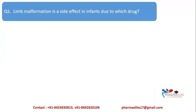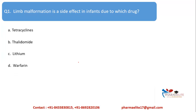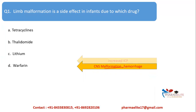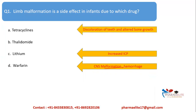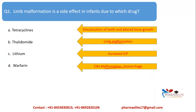MCQ: Limb malformation as a side effect in infants is caused by which drug — tetracycline, thalidomide, lithium, or warfarin? Warfarin causes CNS malformation and hemorrhage; lithium causes increased intracranial pressure; tetracycline causes discoloration of teeth and altered bone growth. Thalidomide is the one that causes limb malformation — if the pregnant female consumed thalidomide, it caused limb malformation in the fetus. The correct answer is option B: thalidomide.